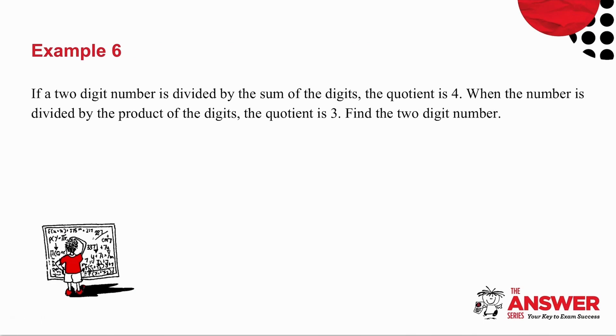I have another word problem for you here. It talks about a two-digit number. Now let's just have a look at some two-digit numbers. If I give you 27, 27 is 2 times 10 plus 7. If I take 93, that's 9 times 10 plus 3. So if I have a two-digit number where the tens digit is X and the units digit is Y, then this number is X times 10 plus Y. In other words, 10X plus Y.